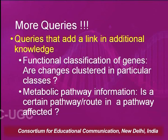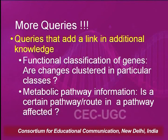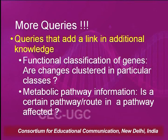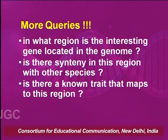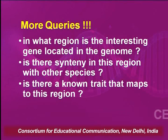We might also like to have additional information from other databases like functional classification of genes - are the genes clustered in a particular class? We might also like to know metabolic pathway information: is there a certain pathway affected by these genes or this disease? We might like to know disease information related to the gene, the clinical expression follow-up correlation to expression pattern, phenotype information for mutants, what is the correlation between a particular phenotype and the expression pattern, and in what region an interesting gene is located in the genome, or whether there is synteny in that region with other species.